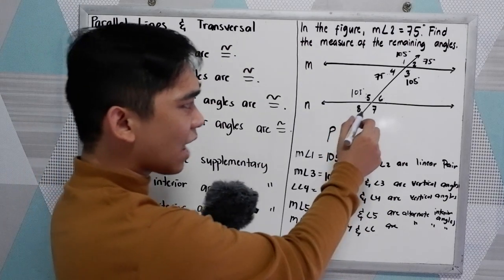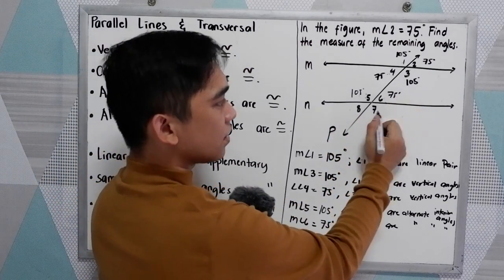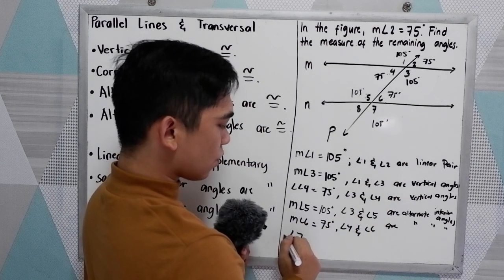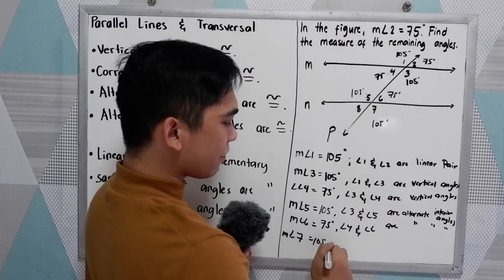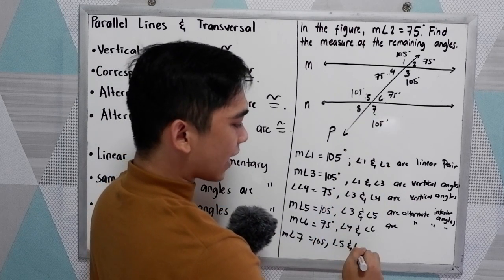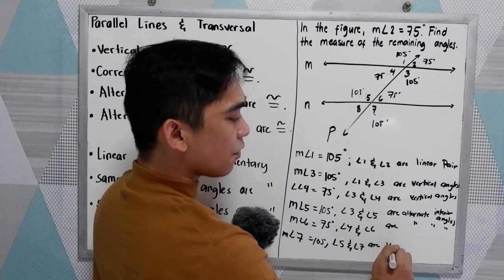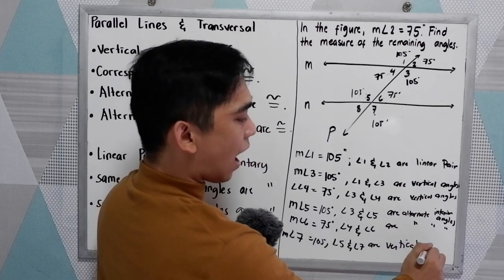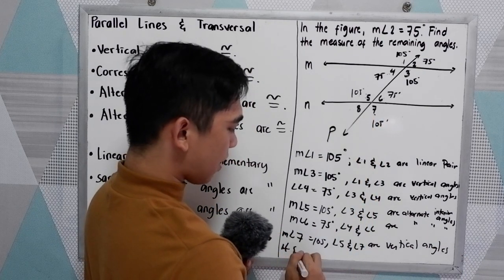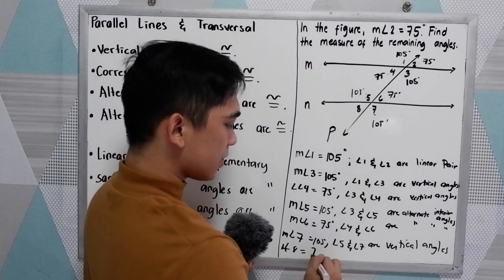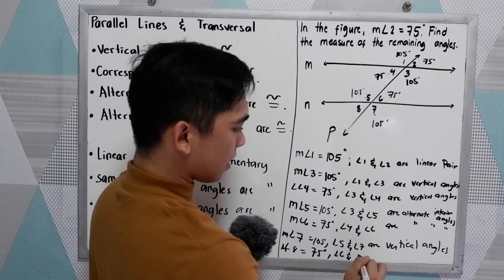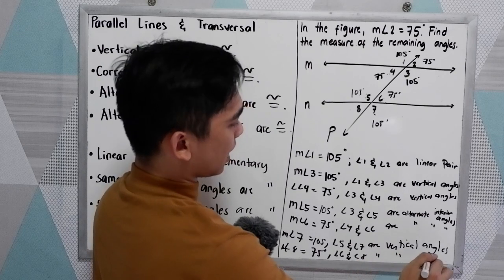Now, angle 7 is 105 degrees because angle 5 and angle 7 are vertical angles. And last, the measure of angle 8 is equal to 75 degrees because angle 6 and angle 8 are vertical angles.